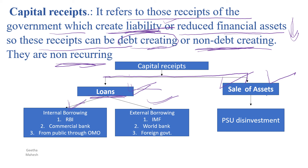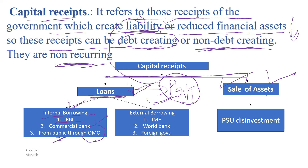We should return the principal amount along with the rate of interest. That is the principal amount and rate of interest paid — this creates a liability for the government. Internally, borrowing is done through open market operations — buying directly from commercial banks and the public. Externally, the government can borrow from international financial institutions such as the IMF, International Monetary Fund, and World Bank, or from foreign governments. That is returnable with a rate of interest, which creates a liability.